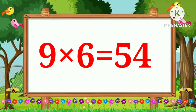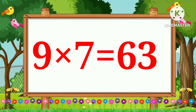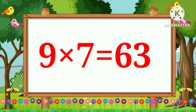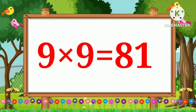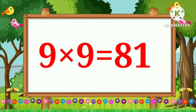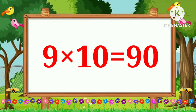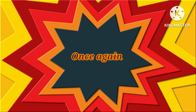Table of Nine. Nine sixes are fifty-four. Nine sevens are sixty-three. Nine eights are seventy-two. Nine nines are eighty-one. Nine tens are ninety.